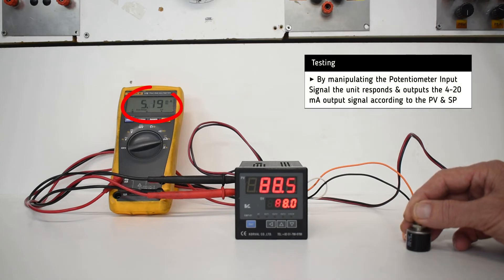By manipulating the potentiometer, we see that the unit reacts and outputs the full 4-20 milliamp according to the setpoint and the process variable.